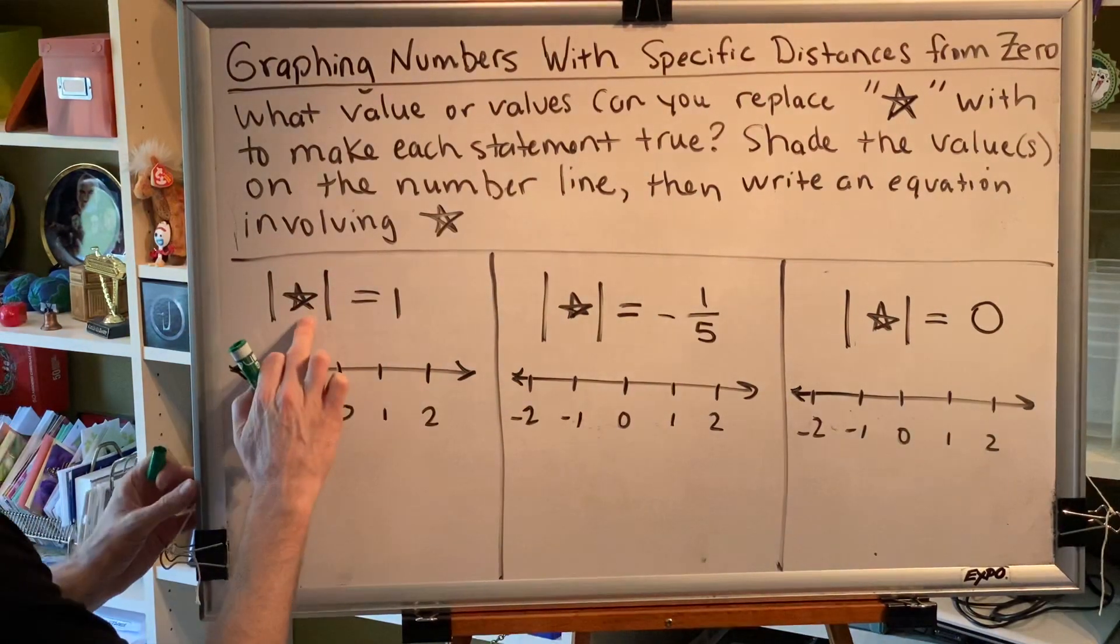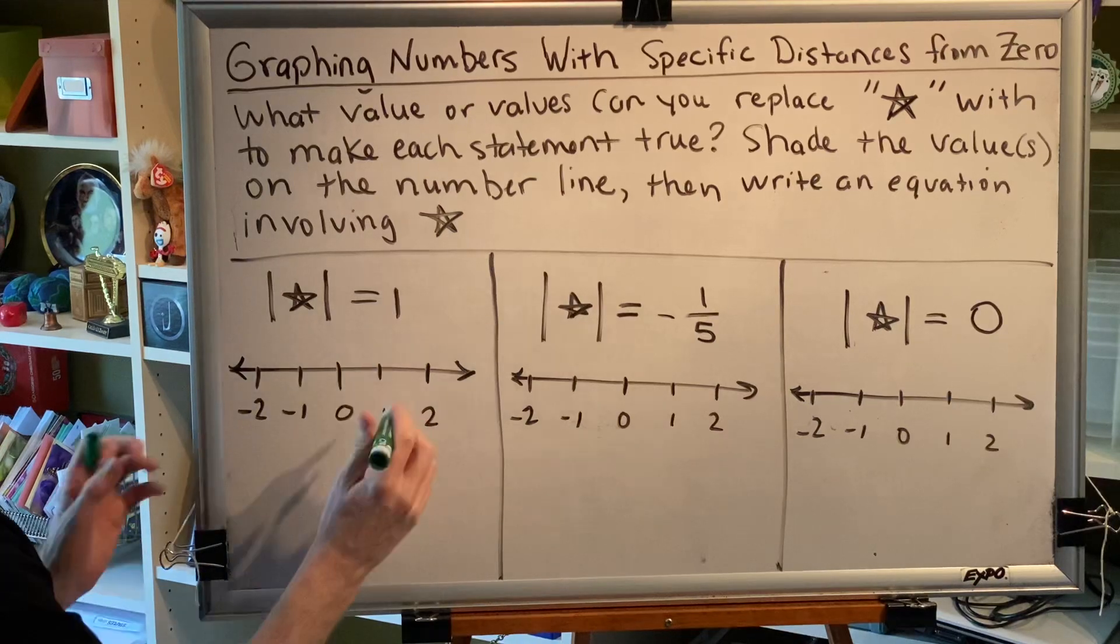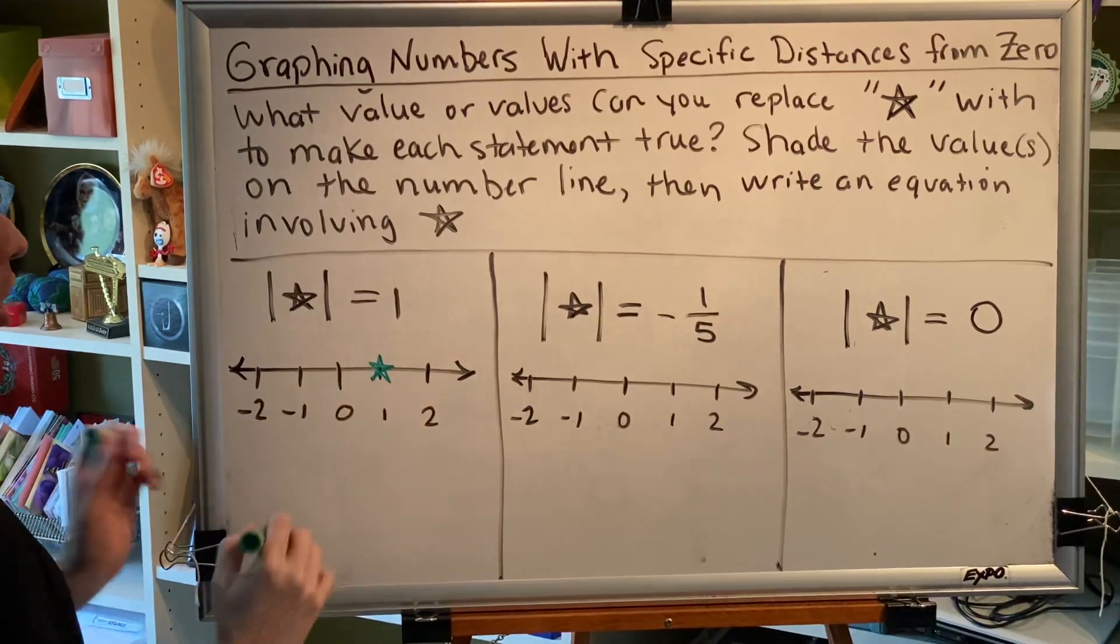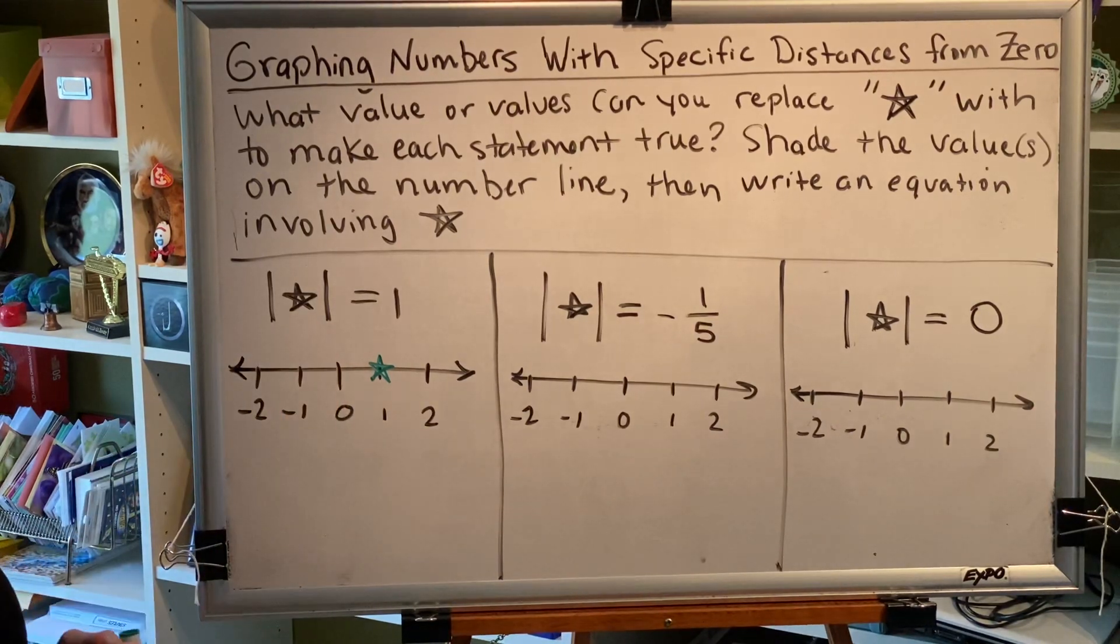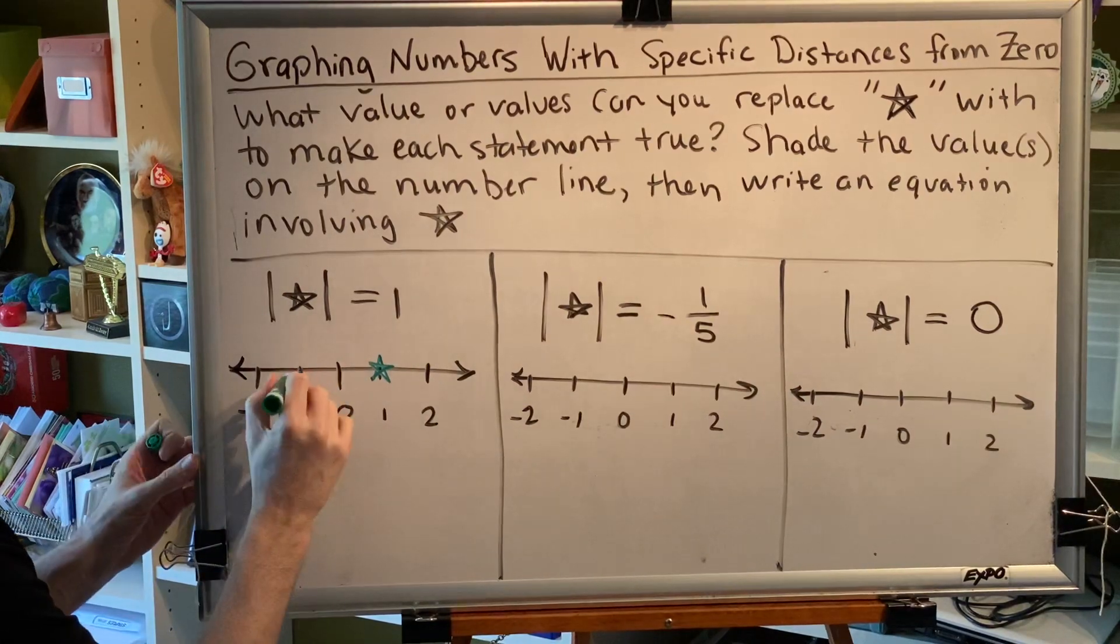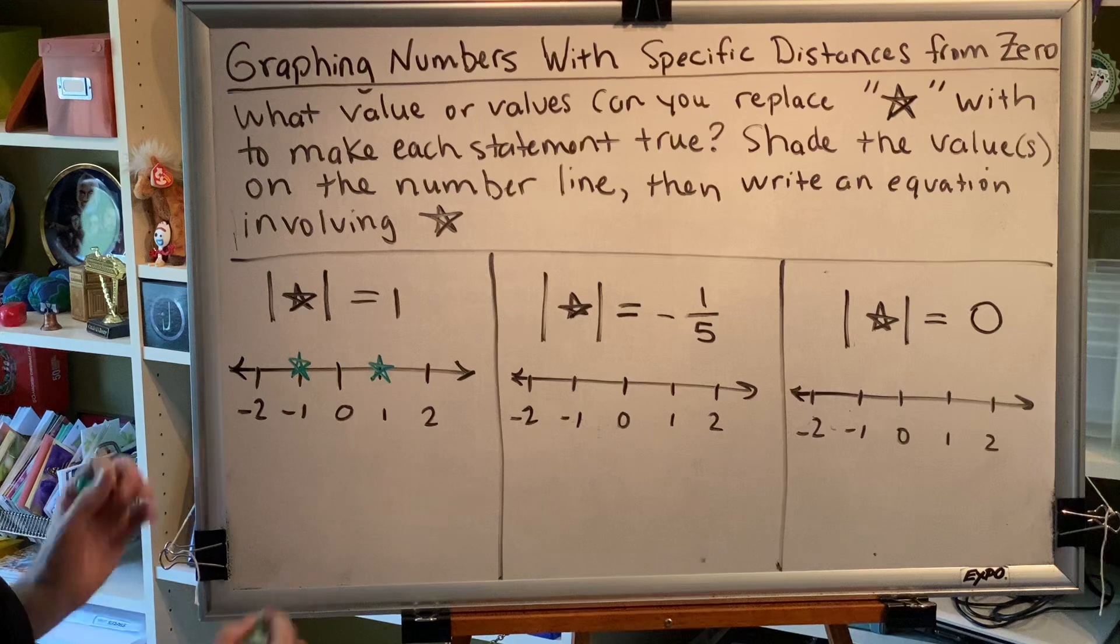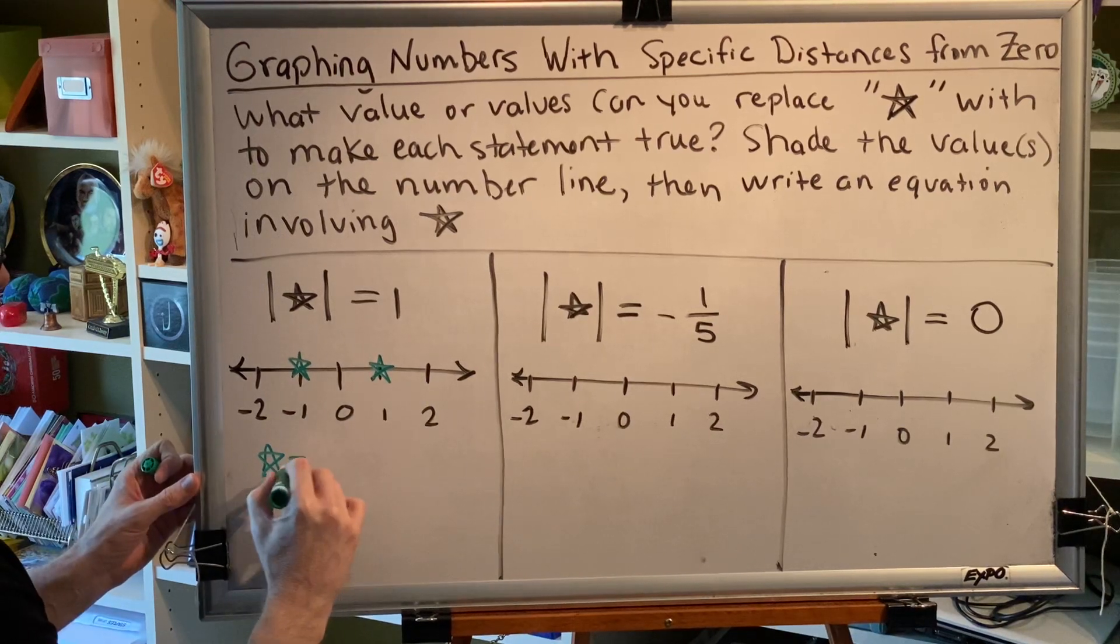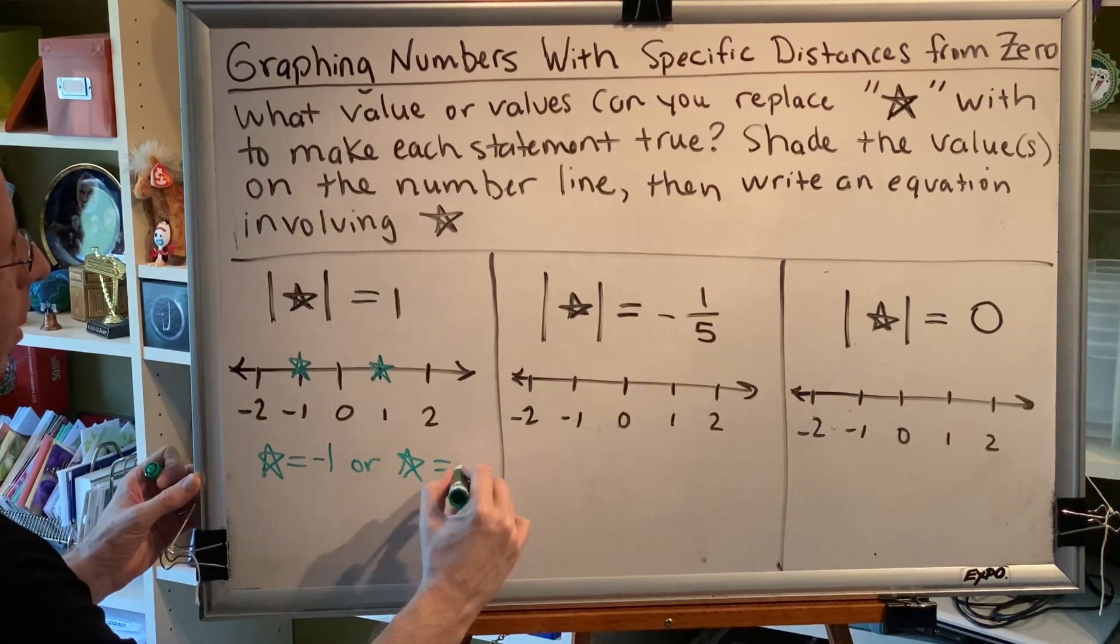Well, certainly if the star was replaced by a 1, the absolute value of 1 is 1. So star could be 1. But if star was negative 1, the absolute value of negative 1 also gives us 1. So star could be negative 1. Now we write our equations: star equals negative 1 or star equals 1.